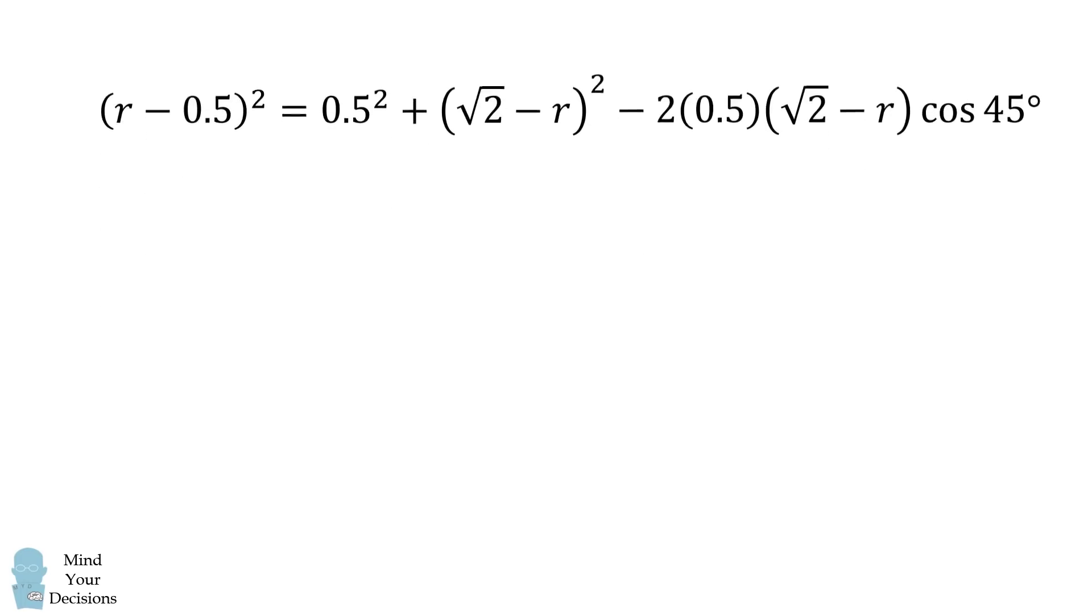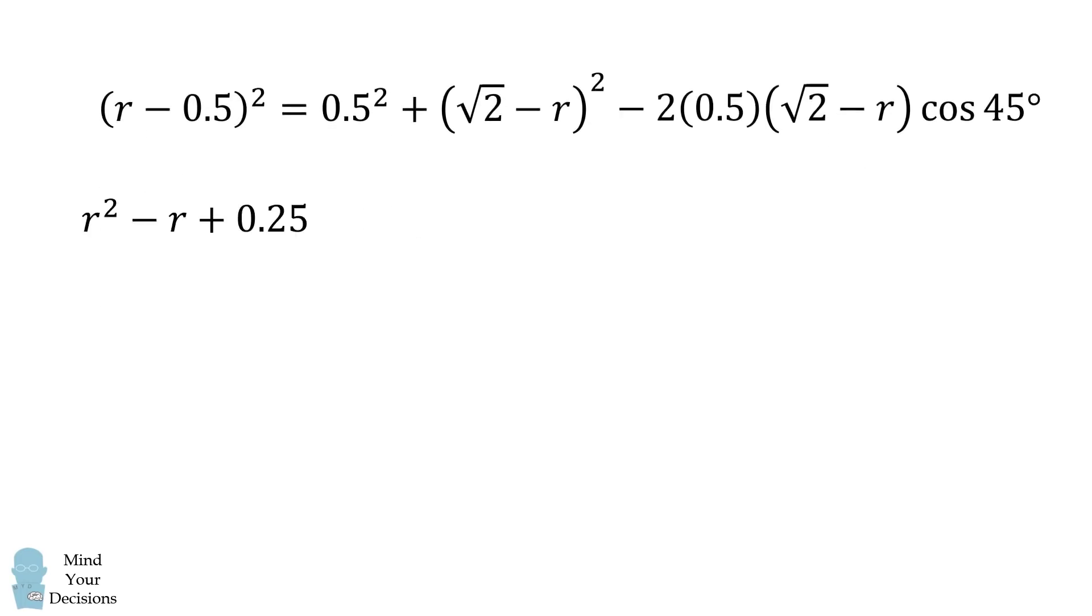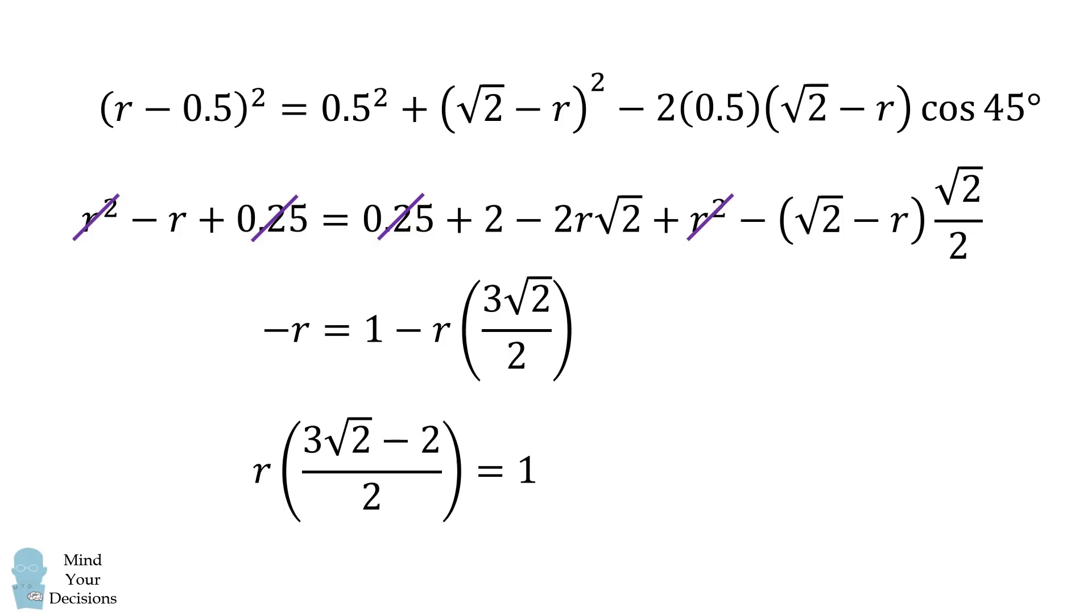To do that, we'll expand each binomial and simplify each side of the equation. Then, we will simplify this equation by cancelling like terms. We now simplify each side of the equation, and we get a linear equation in r. We can group the r terms together, and then solve for r.